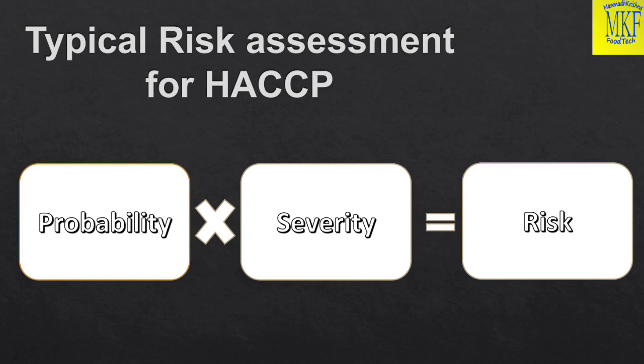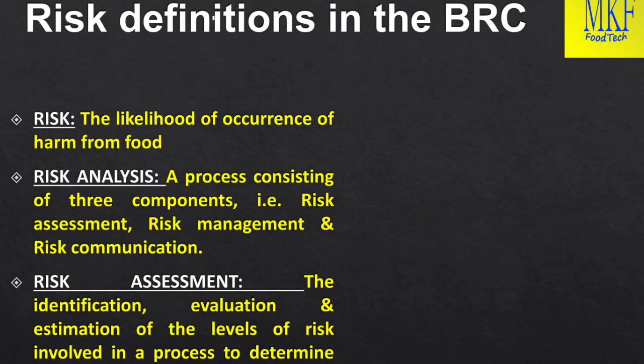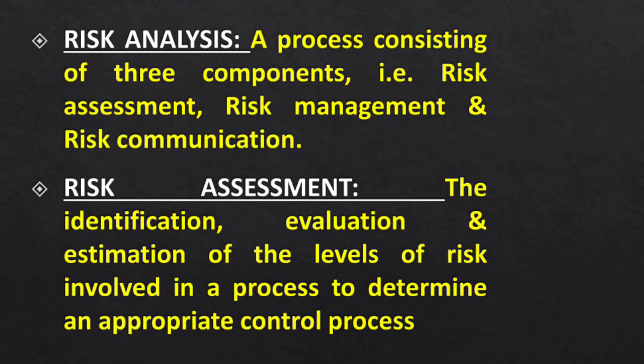The typical risk assessment model for HACCP is: Probability multiplied by Severity equals Risk. As per GFSI definitions: risk is the likelihood of occurrence of harm from a hazard. Risk analysis is a process having three components — risk assessment, risk communication, and risk management. Risk assessment is the identification, evaluation, and estimation of the levels of risk involved in a process to determine an appropriate control process.